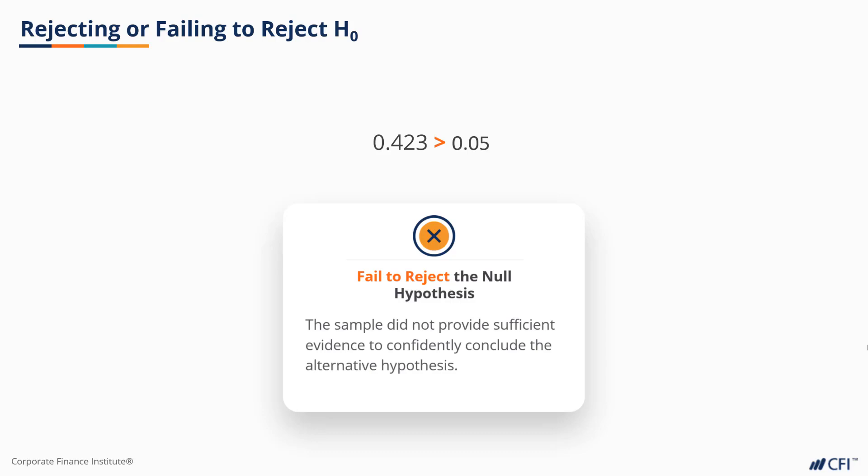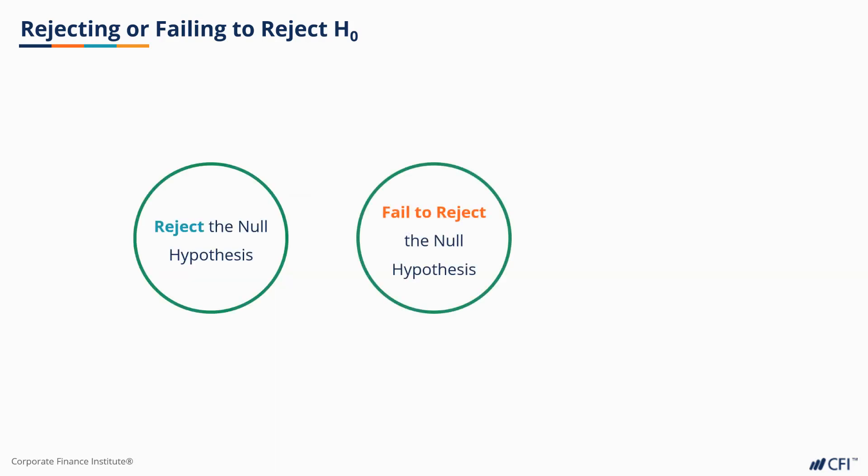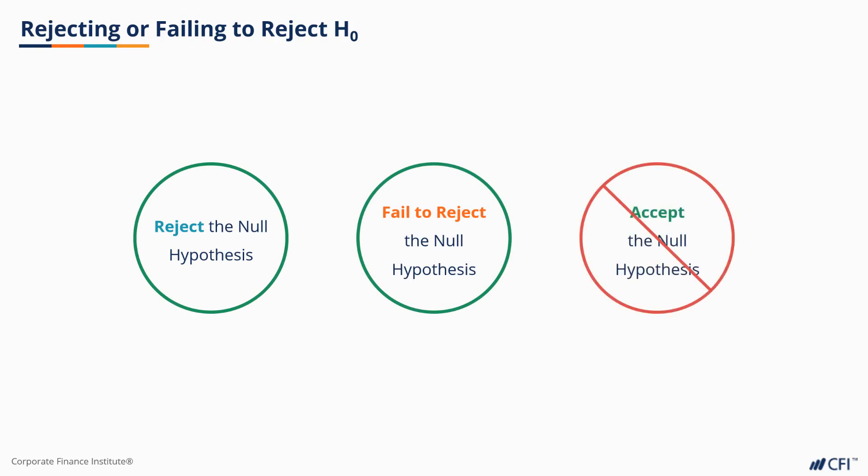Notice that our hypothesis test can only reject the null hypothesis or fail to reject the null hypothesis. We can never say, for example, the null hypothesis was proven correct. This is because it can never prove the null hypothesis true, unless we test the entire population.